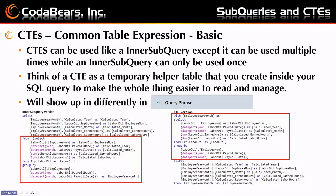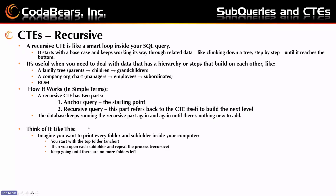A recursive CTE is a smart loop inside your query — useful when you need to deal with data that has hierarchy or steps that build on each other, like a family tree: parents, children, grandchildren; a company org chart with managers, employees, subordinates; or a bill of materials. The way it works is there are two parts: an anchor query, which is the starting point, and a recursive query, which refers back to the anchor to build the next level.